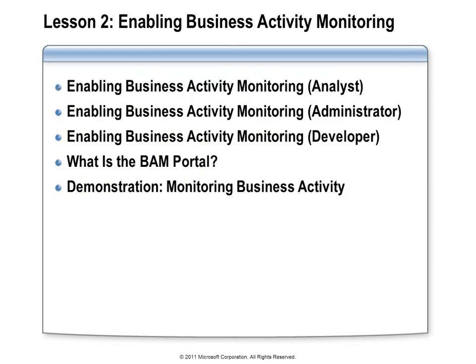The process to enable BAM in applications starts with the business analyst creating a list of data they would like collected and the format in which they would like it presented. That set of information is known collectively as a BAM definition. Once complete, a BizTalk administrator can take that BAM definition and deploy it to a BizTalk environment. Then it will be up to a developer to use the Tracking Profile Editor to configure the interceptors that need to collect that data. Note that the WF and WCF interceptors cannot be configured with the Tracking Profile Editor.